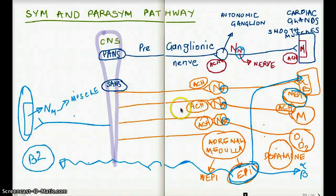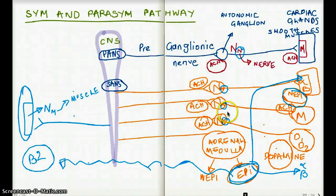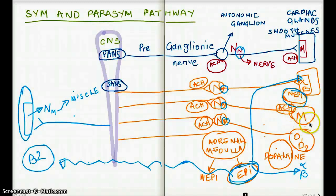The second pathway again has acetylcholine as the preganglionic neurotransmitter — same as the parasympathetic and the first sympathetic example. But the postganglionic is going to have acetylcholine as its neurotransmitter as well, and the receptor is going to be muscarinic.